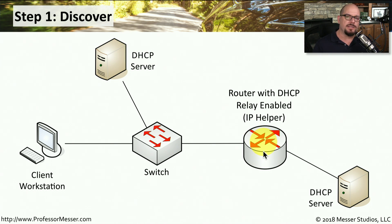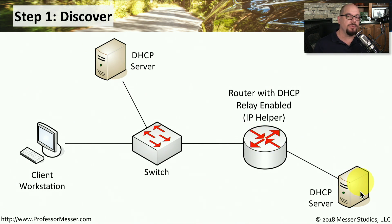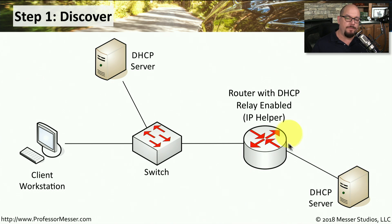The DHCP process works on a local subnet. On our network, we have a DHCP server on our local subnet, and also a DHCP server that is not on our local subnet. To be able to use this remote DHCP server that's on a different IP subnet than ours, we need to configure our local router to have a DHCP relay address configured.